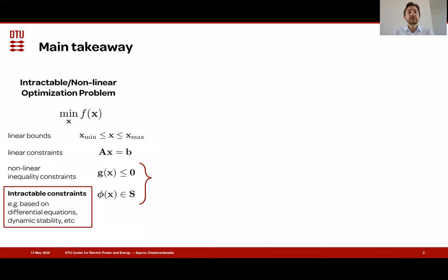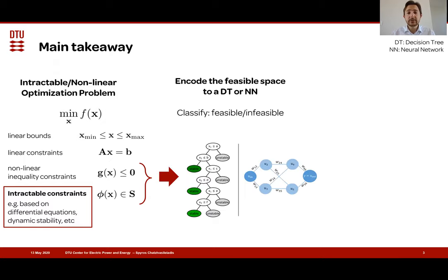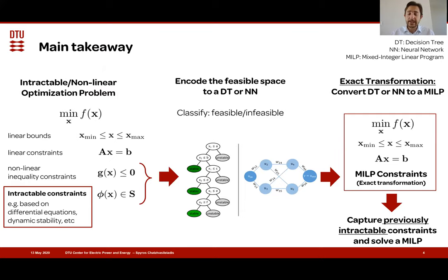So what is the main takeaway of this presentation? We have several optimization problems — for example, ones applying to dynamic systems — that require constraints described by differential equations, and these constraints are actually intractable. What we propose is to use decision trees and neural networks to capture the feasible space characterized by all these constraints: linear, nonlinear, and intractable constraints based on differential equations. Then, through an exact transformation, we can transform the information encoded in a decision tree or neural network to a set of mixed integer linear constraints, and solve a MILP problem that has encoded all these previously intractable constraints.